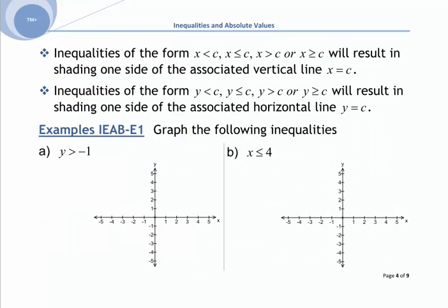Inequalities of the form x < c, x ≤ c, x > c, or x ≥ c produce a vertical line at x = c. Inequalities of the form y < c, y ≤ c, y > c, or y ≥ c produce a horizontal line in the form y = c.